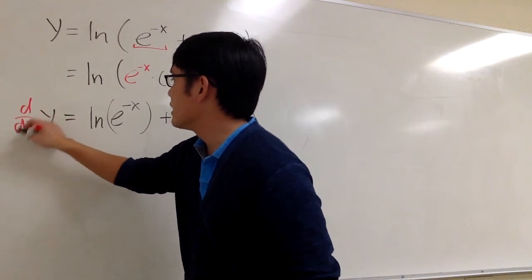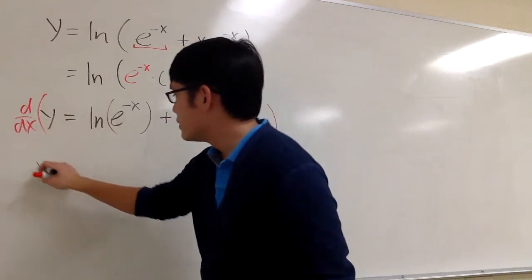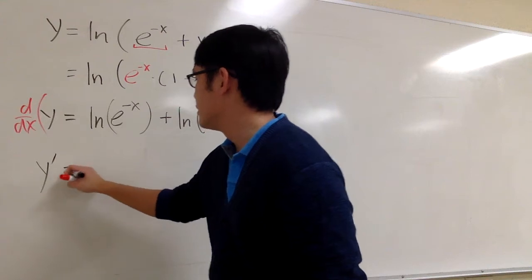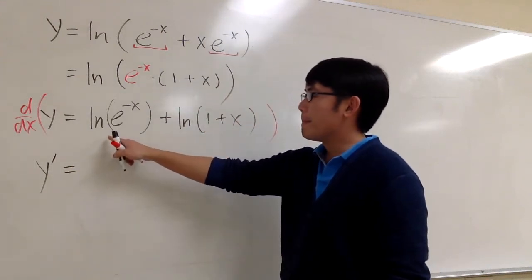let's put d dx across the equation. I will end up with, let me use y prime for this. Oh, by the way, I don't even need to bother with ln of e to the negative x.